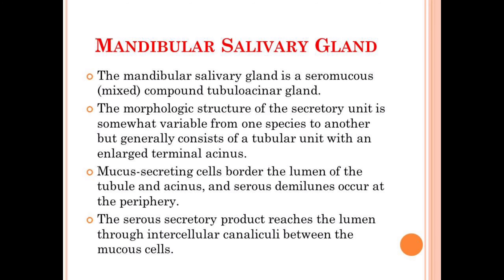This simply implies that the structure of the secretory unit can differ in different animals, but they consist of a tubular unit with an enlarged terminal acinus, which is a common feature present in every animal.